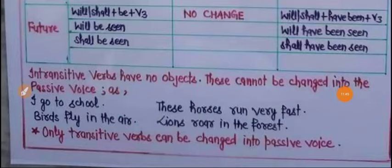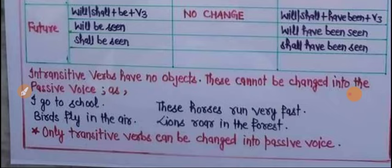Intransitive verbs have no objects, therefore these cannot be changed into the passive voice. مثلاً: I go to school, These horses run very fast, Birds fly in the air, Lions roar in the forest — یہ سب intransitive verbs ہیں جن کے لیے object کی ضرورت نہیں ہوتی۔ صرف transitive verbs کو ہم passive voice میں بدل سکتے ہیں۔